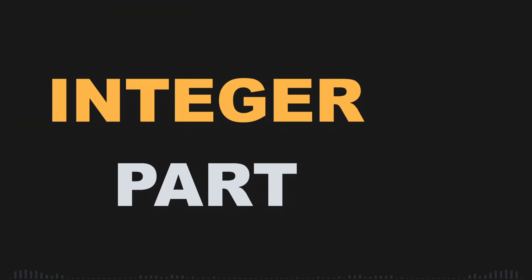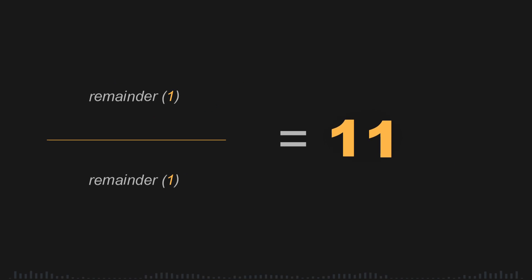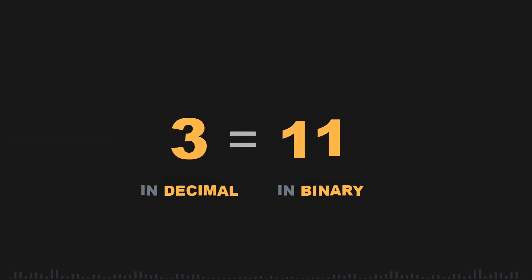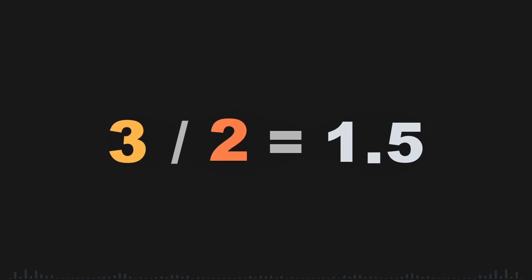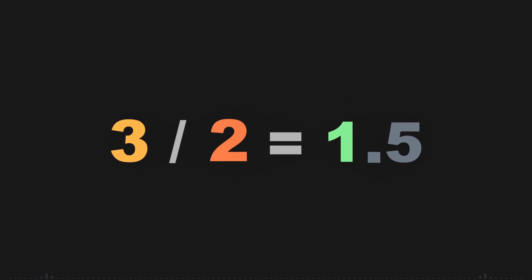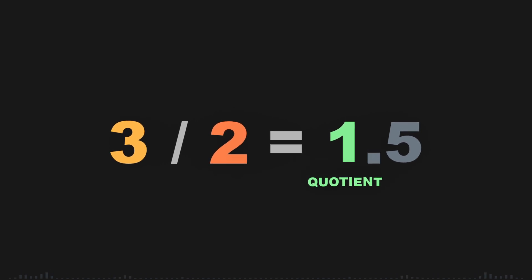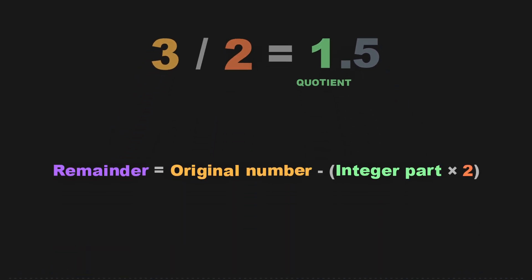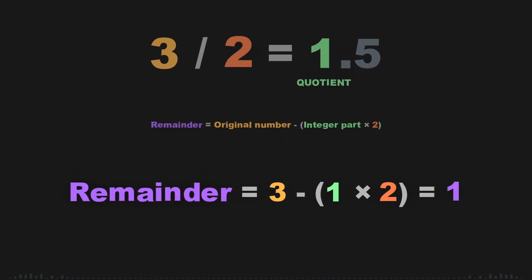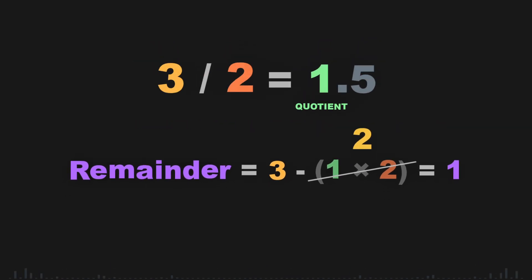Now let's apply this to our example and see how 3.14 fits into this format. We start with the integer part of 3.14, which is 3. To convert any number to binary, we divide by 2 repeatedly until we reach 0, keeping track of the remainder each time. In step 1, dividing 3 by 2 gives a quotient of 1 — we take only the integer part and ignore the fraction. The remainder is calculated as: original number minus integer part times 2, so 3 minus 1 times 2 equals 1. The remainder is 1.